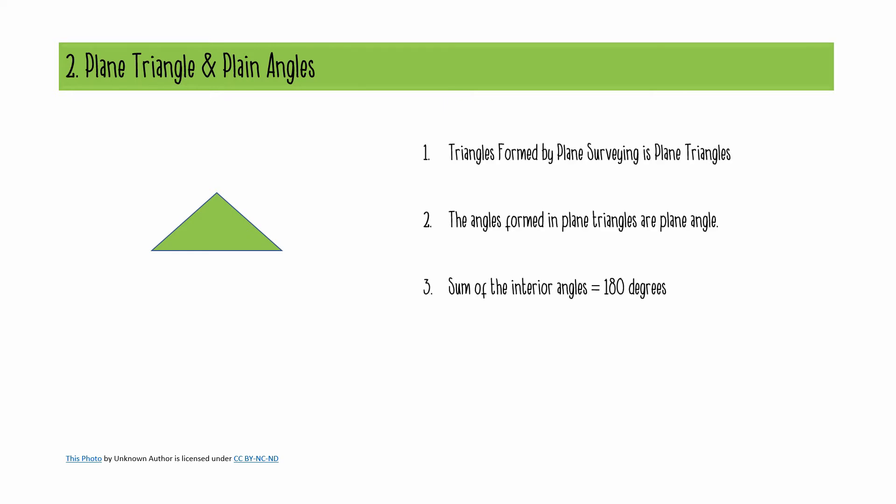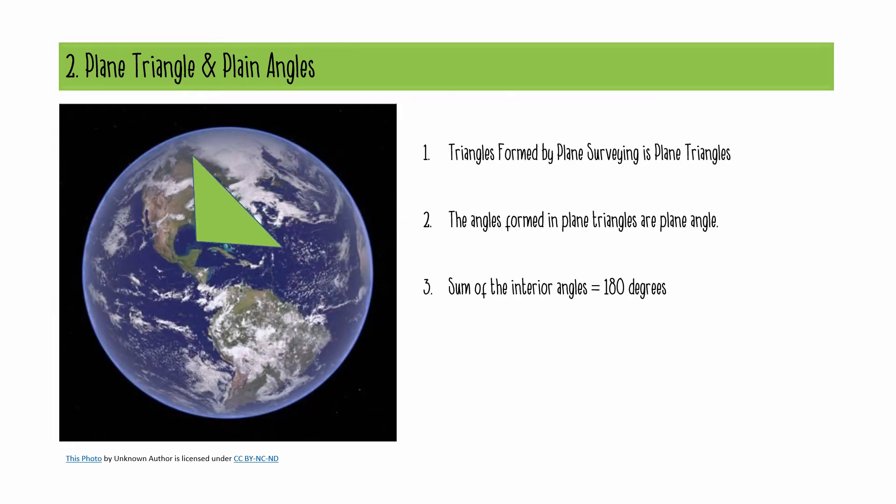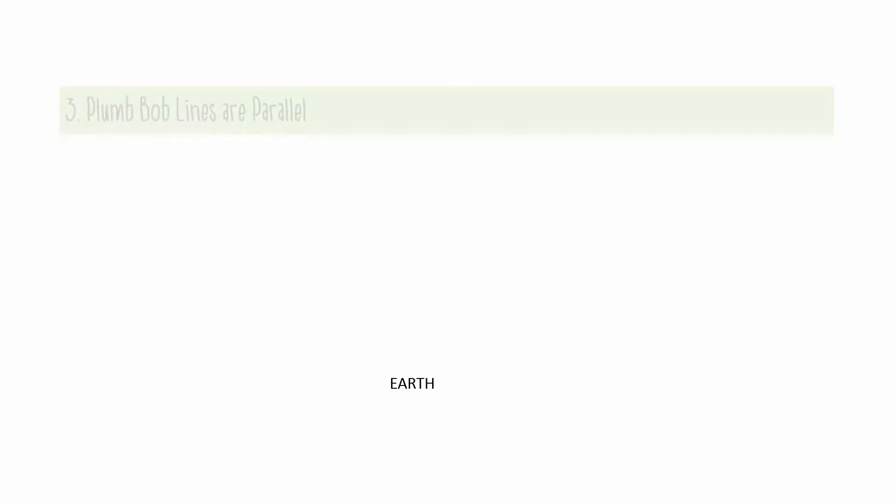The second important principle is plane triangles and plane angles. The triangles and angles formed by plane surveying are plane. In other words, you consider the sum of angles of the plane triangle. It will be equal to 180 degrees. So this is the second important principle of plane surveying.